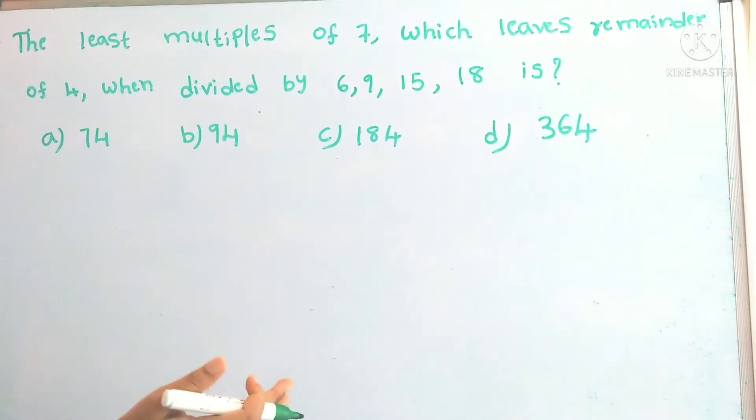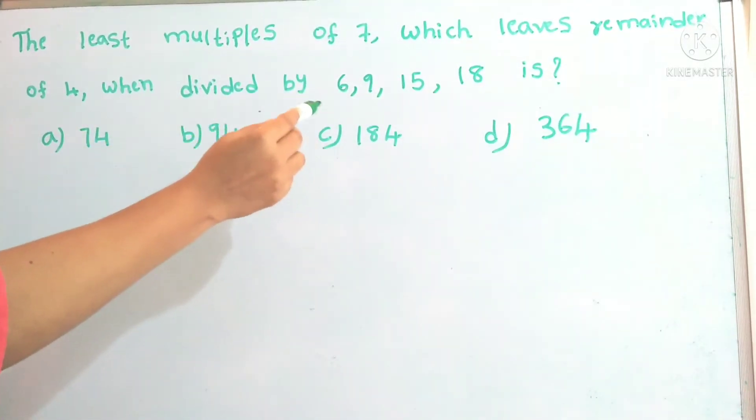Hi, today's video I am going to explain one of the questions in the HCF and LCM concept. The question is: the least multiple of 7 which leaves remainder of 4 when divided by 6, 9, 15, and 18.